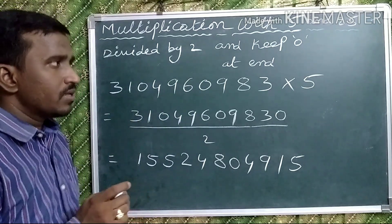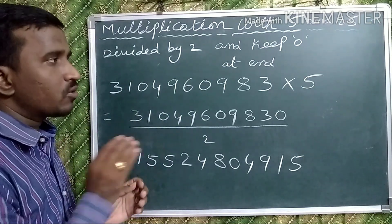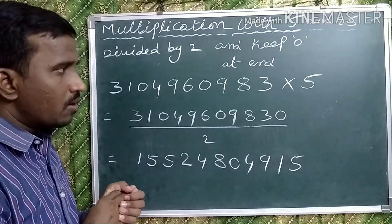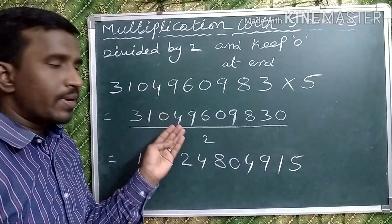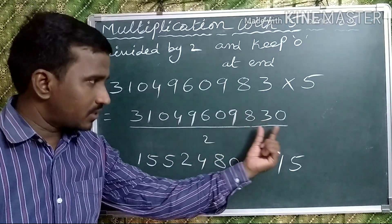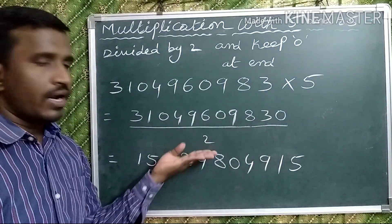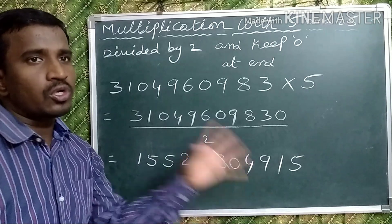So for multiplication with 5: keep 0 at the end and divide by 2.